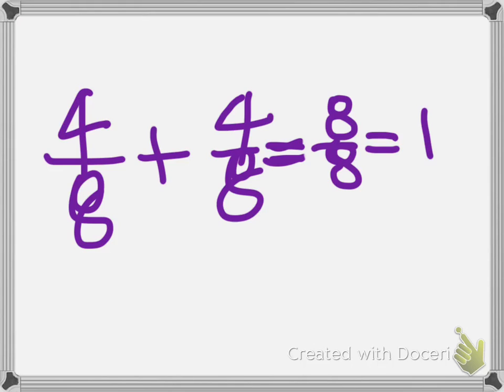So four eighths plus four eighths is a whole, so it's eight over eight. Eight over eight equals one. So I think the bottom number is the denominator and the top number is the numerator, and it equals eight over eight, which is equal to one.